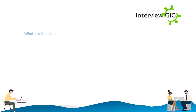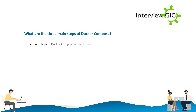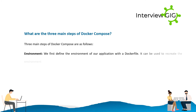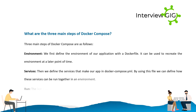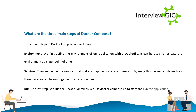What are the three main steps of Docker Compose? Environment — we first define the environment of our application with a Dockerfile. It can be used to recreate the environment at a later point of time. Services — then we define the services that make our app in docker-compose.yml. By using this file we can define how these services can be run together in an environment. Run — the last step is to run the Docker container. We use docker-compose up to start and run the application.